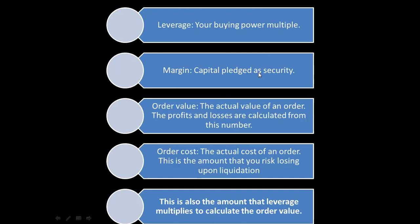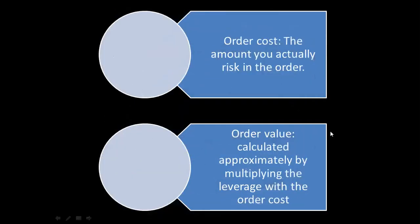Order value is the actual value of an order — profits and losses are calculated from this number. Order cost is the actual cost of an order — it is the amount you risk losing upon liquidation. Order cost is whatever money you put in multiplied by the leverage you're using. The order value is calculated by multiplying the leverage with the order cost.